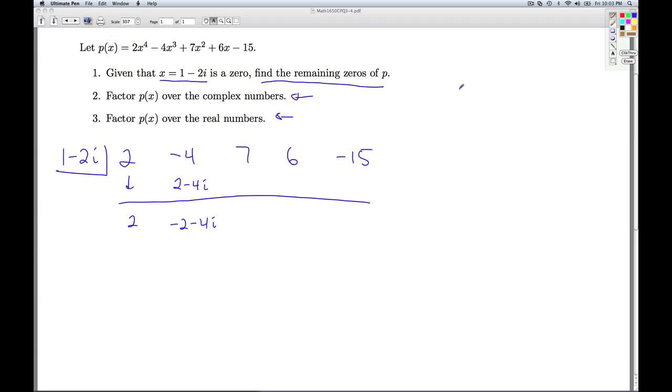When we multiply complex numbers together, the thing we want to keep in mind is that i² is -1. So when I multiply (1 - 2i) times (-2 - 4i), and multiply those like any binomials, -2 - 4i + 4i + 8i². So I get -2, these cancel out, and 8i² remember is 8 times -1, so that gives me -10.